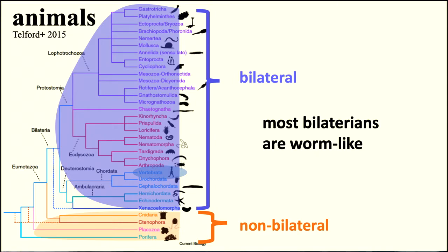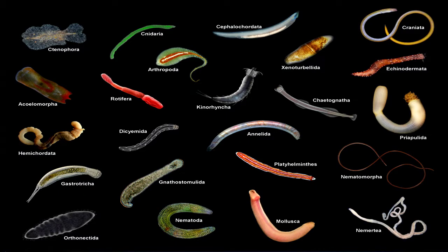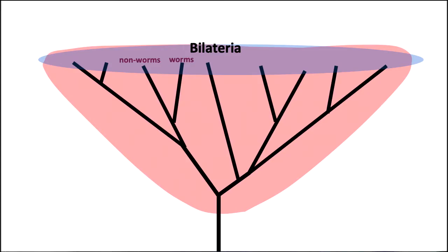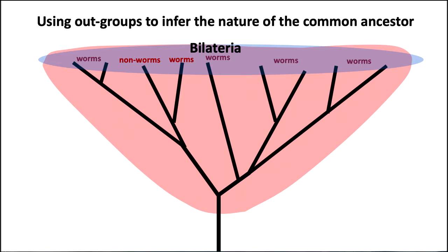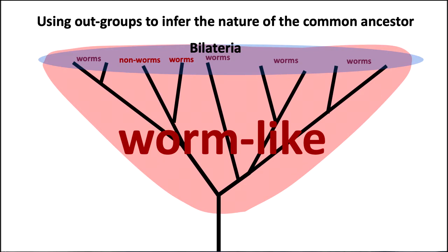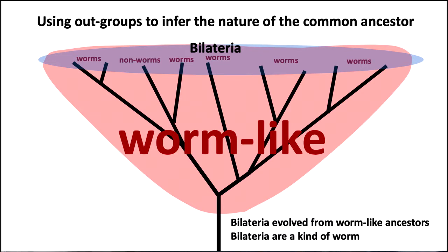We can make the statement that most bilaterians are worm-like. If we look at all those listed organisms, they all kind of look like worms — there are so many different kinds of worms, they're a very complicated bunch. So using outgroups to infer the nature of the common ancestor of chordates, we can infer that down here are worm-like things. Bilateria evolved from worm-like ancestors, and bilateria are a kind of worm.